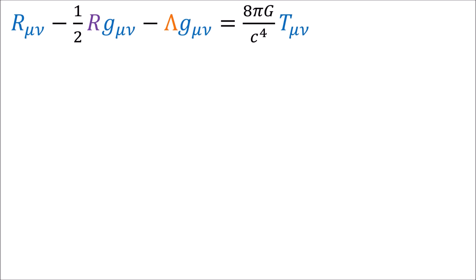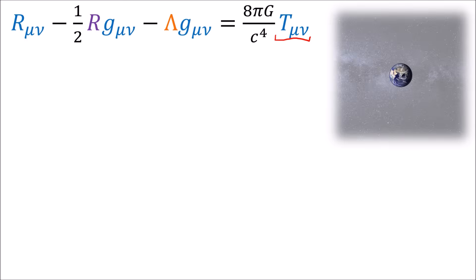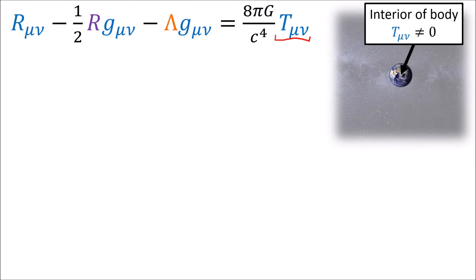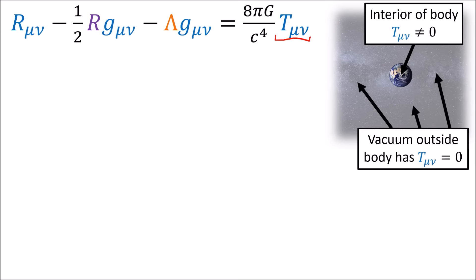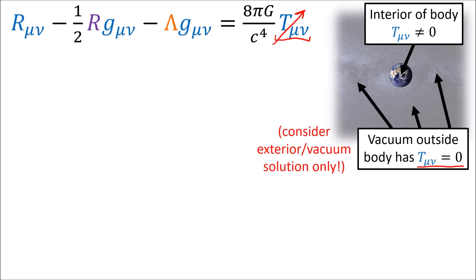So what type of energy-momentum tensor will we use to get our spacetime solution for a spherically symmetric mass? We know inside the Earth we have mass and pressure, so the energy-momentum tensor inside the Earth is non-zero. But outside the Earth, we can assume spacetime is approximately a vacuum, so the energy-momentum tensor is zero. In this video, we're just going to focus on spacetime in the exterior vacuum region only, so we're going to set the energy-momentum tensor in the Einstein field equations to zero.